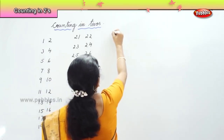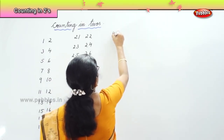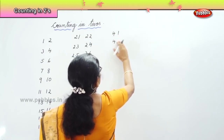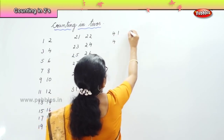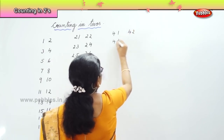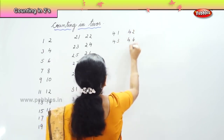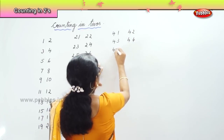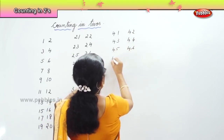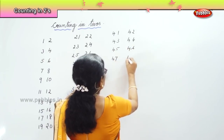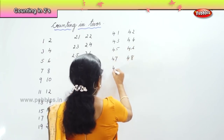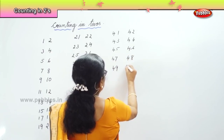Forty-one, forty-two, forty-three, forty-four, forty-five, forty-six, forty-seven, forty-eight, forty-nine, fifty.